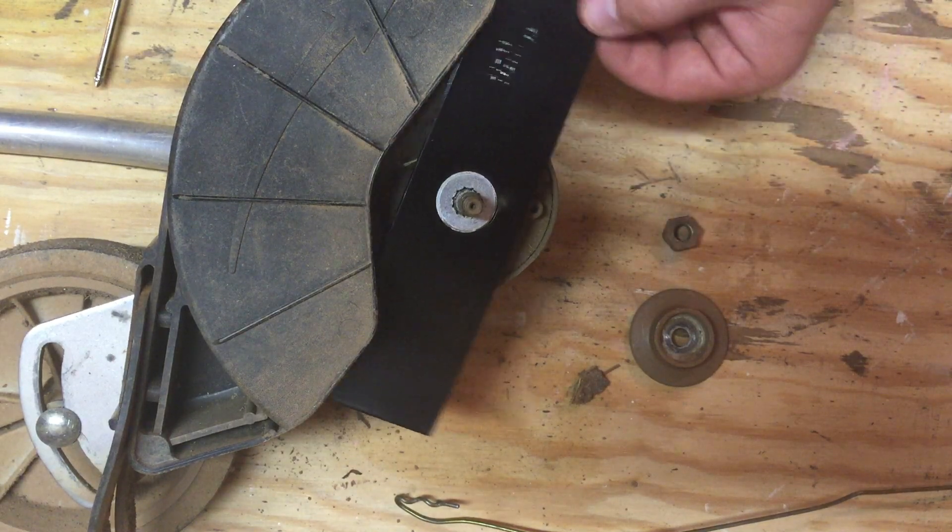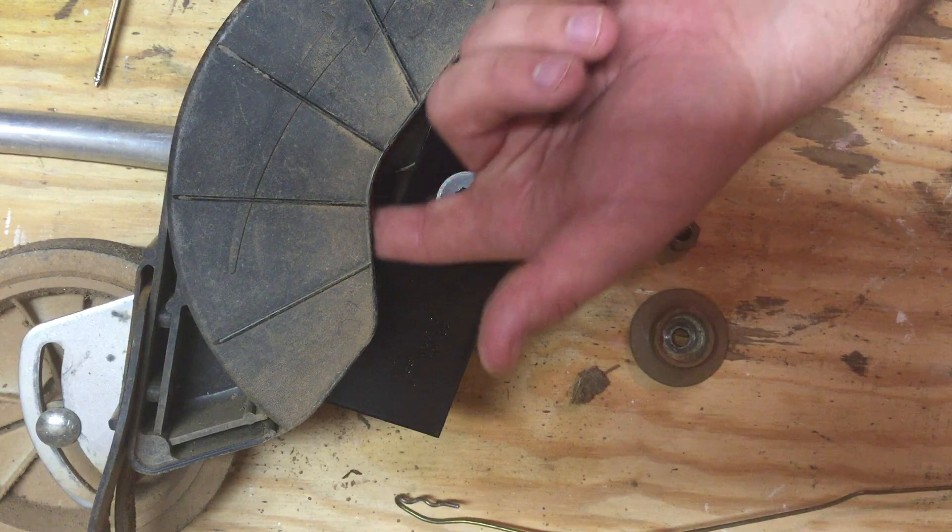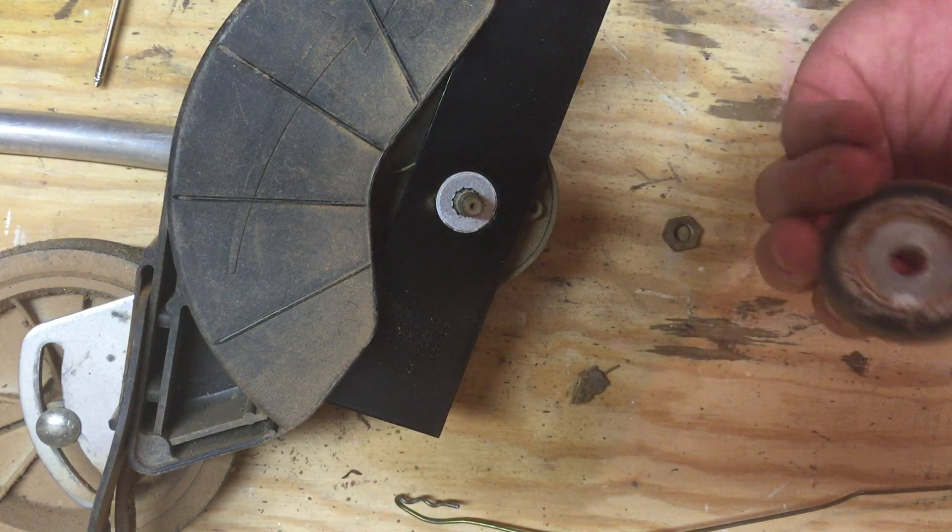So you just lay the new blade on there. It's the same on both sides. Make sure it spins freely. If you have any trash build up in here, any grass or dirt build up from edging on wet days, make sure you clear that out. And then you just repeat the process.